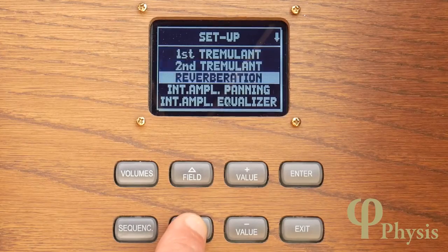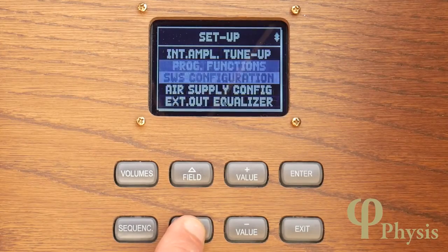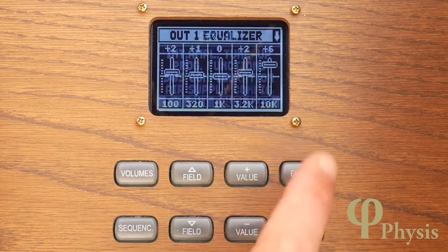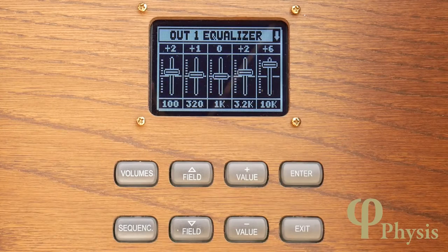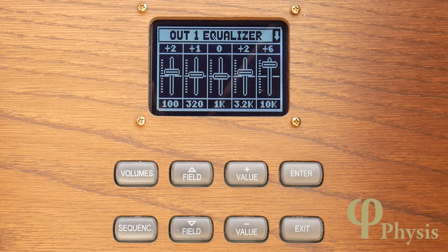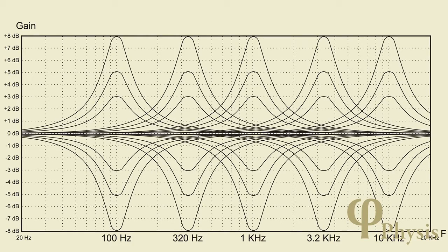If you scroll down the setup menu you'll find the external out equalizer, which allows you to adjust the tonal balance of each channel individually. Just as with the internal audio setup, there are five frequency bands with a range of plus or minus 8 dB, and this can be used to compensate for the characteristics of the loudspeakers or their placement.